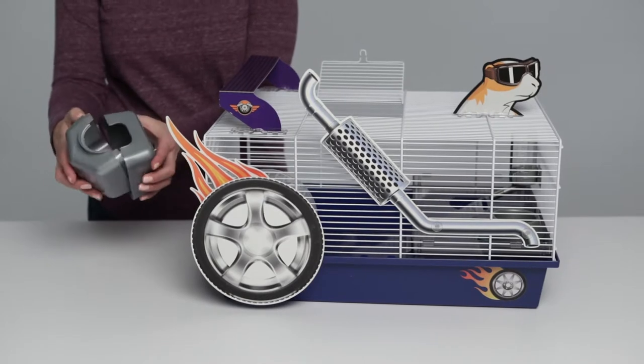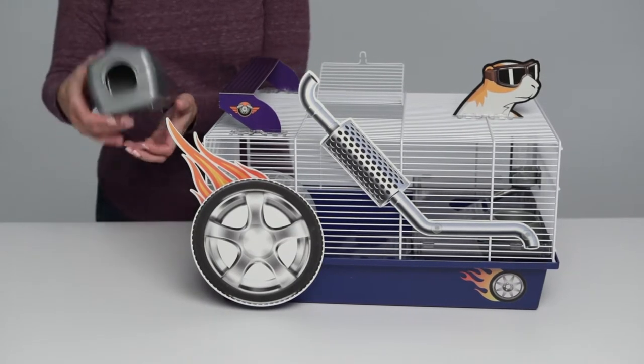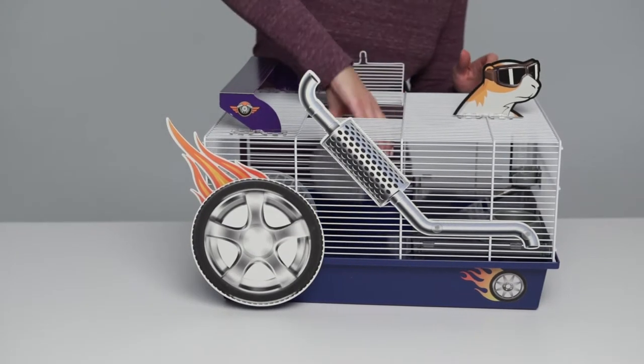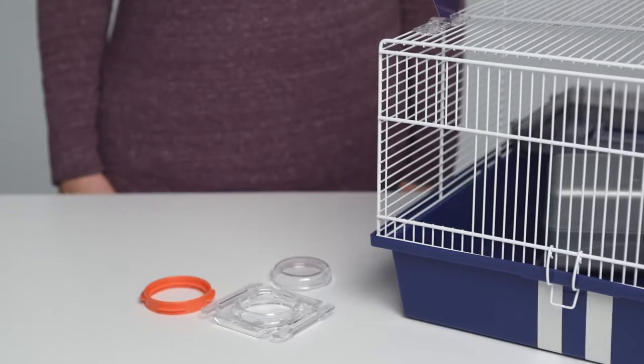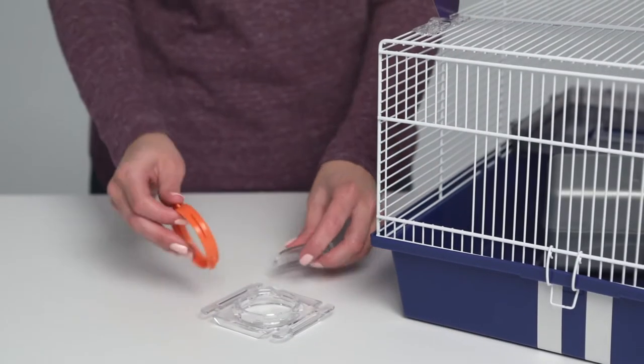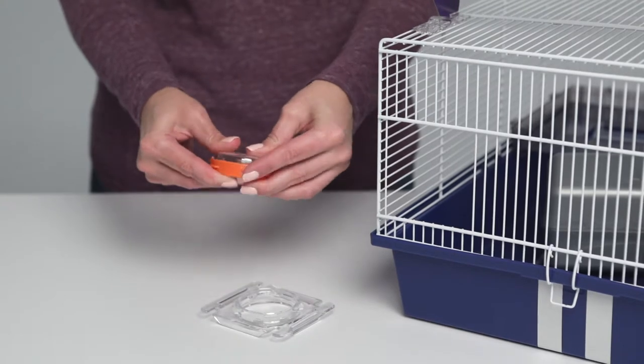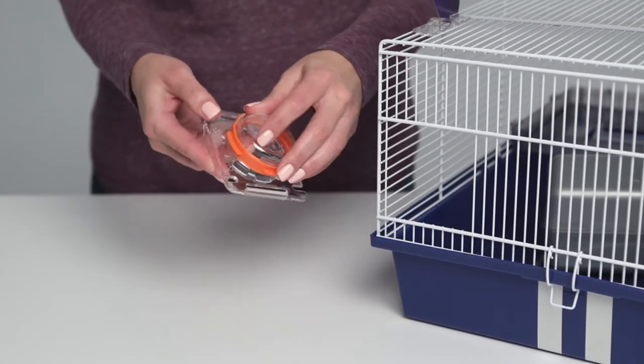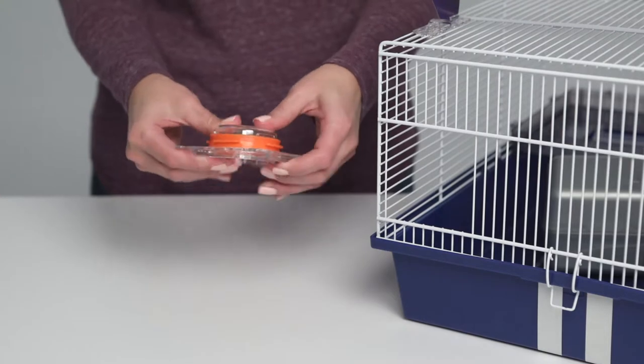Connect the pieces of your hamster hideout and place it in the home. It's time to attach the tube adapters. Attach the plastic cap to the colored ring, then attach the ring to the square adapter.